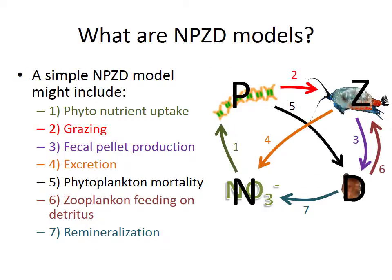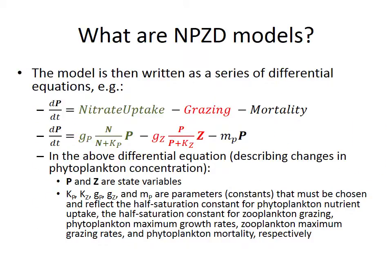Think about phytoplankton here. The amount of phytoplankton is going to be determined by how much nutrients they take up, how much they get grazed by zooplankton, and how much they die. These factors show up in the equations and allow us to ask: how would the ecosystem change if we make the phytoplankton growth rate faster? Or how would the ecosystem change if we make the half-saturation constant lower? How would this change the overall dynamics of how the ecosystem behaves?